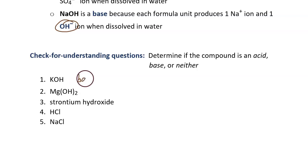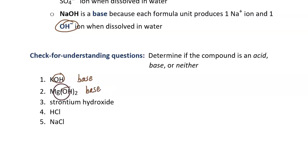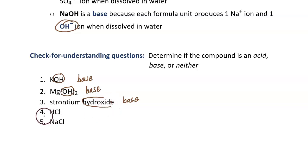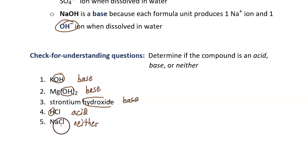Number one is a base — notice the hydroxide in that formula. Number two is a base; again, notice the hydroxide. Number three is a base — it has hydroxide. Number four is an acid; it starts with hydrogen. And number five is neither. When this is dissolved in water, it'll make sodium ions and chloride ions, but it's not going to make hydrogen and it's not going to make hydroxide. This concludes the video about acids and bases.